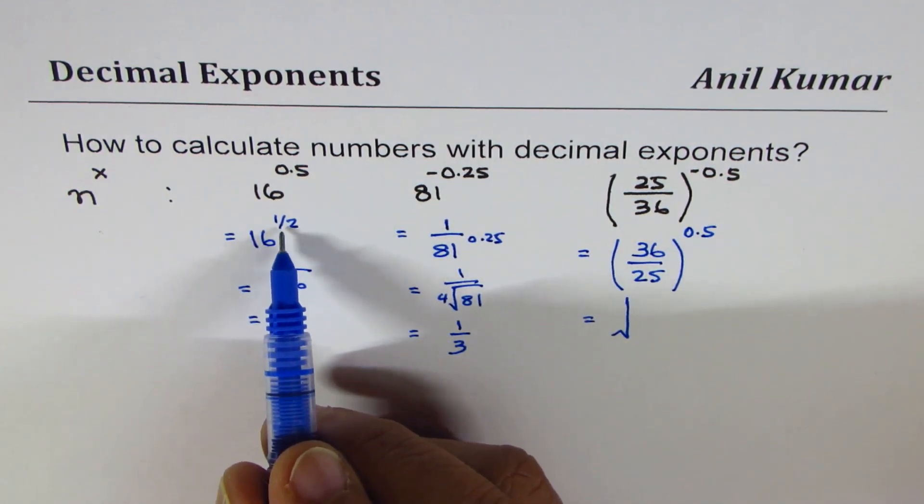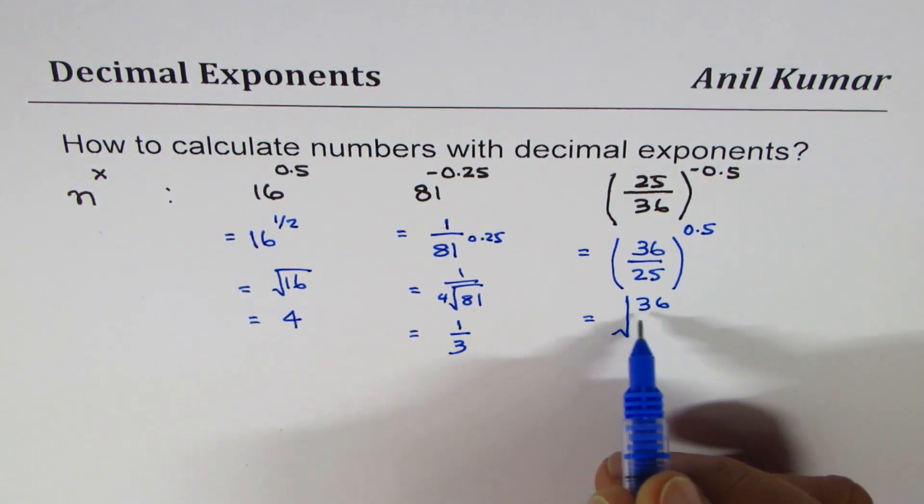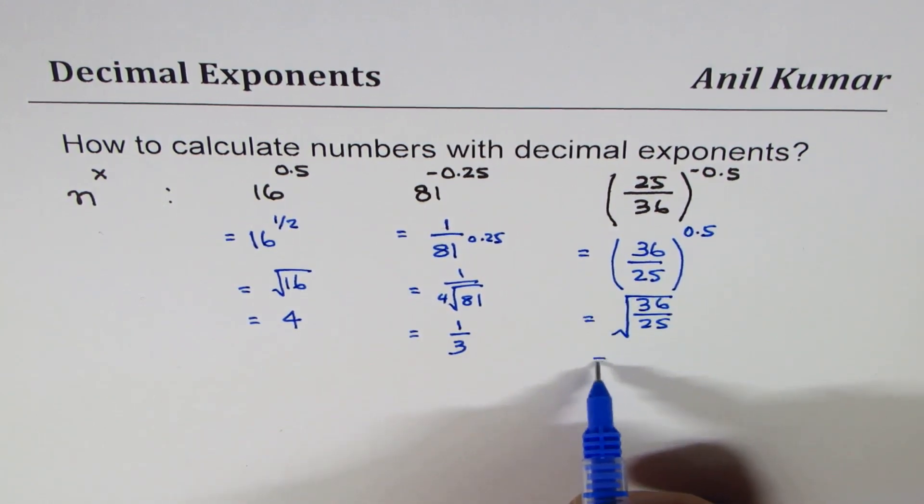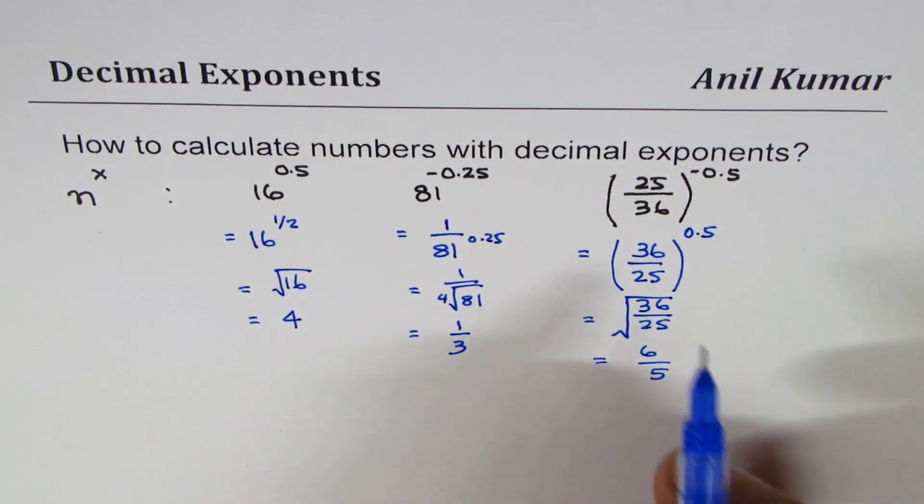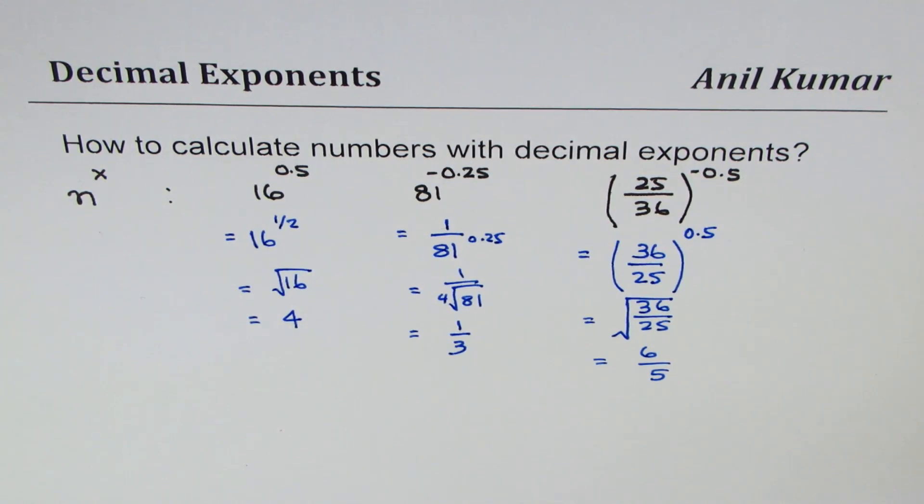And now we'll figure out what is square root of 36 over 25. 0.5 means to the power of half, so we can write this as square root of 36 over 25, and that equals 6 over 5.